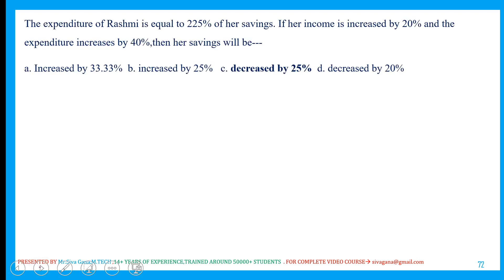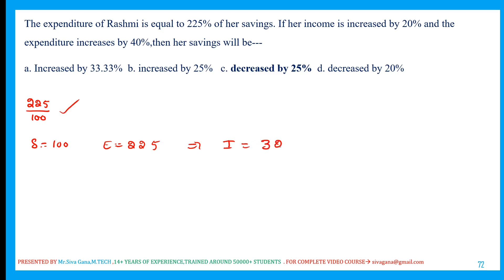Next question: the expenditure of Rashmi is equal to 225 percent of her savings. So 225 divided by 100 — if saving is taken as 100, then expenditure is 225. Therefore income equals expenditure plus saving, which is 325. Now, income is increased by 20 percent, so the new income is 325 plus 20 percent of 325, which equals 390.